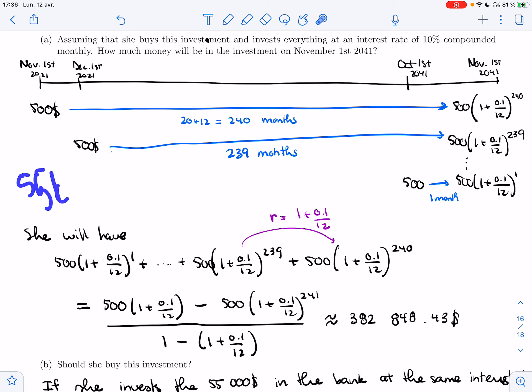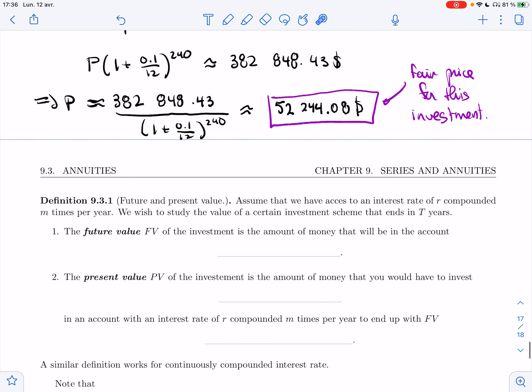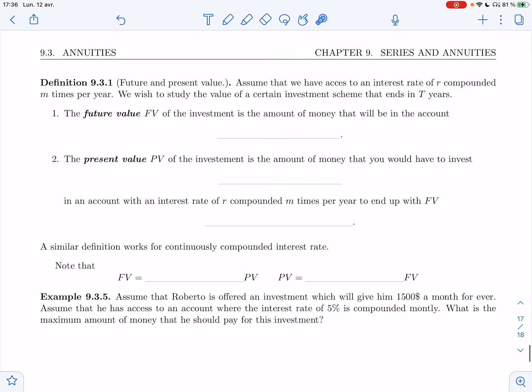So I want to take this idea that we just used of bringing the worth of something, either the 55K that lives over here, bringing it to the future, or taking the 382K that we have in the future and bringing it to the present to see how much it's worth in today's money and future money. And so that's what we do in the following definition. Definition 9.3.1, future and present value.